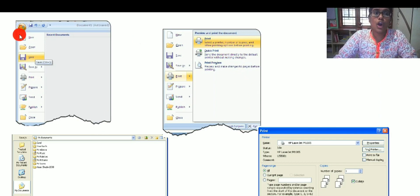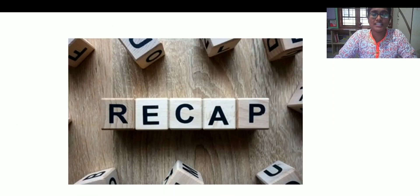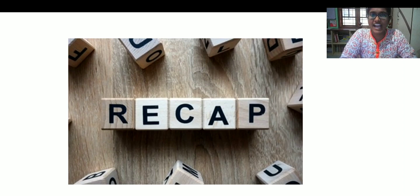And how to print a document? Go to office button. Click the print here. Then this option is seen. Select on print again and you will get a pop-up like this. Select all the specifications required and click on print and your document is printed. Let us have a recap.